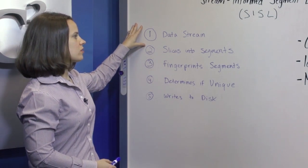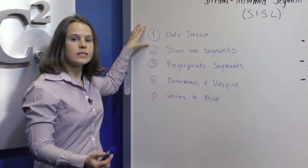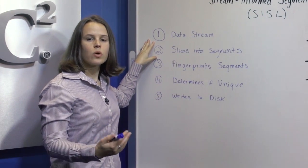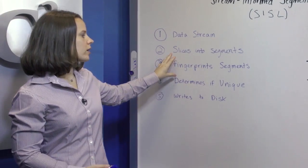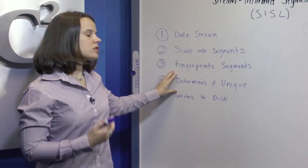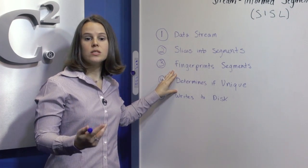First, data is streamed into RAM on the Data Domain System. Then SISL slices that data into 4 to 12K segments. It will create a fingerprint for each segment, and then it must determine if that segment is unique.